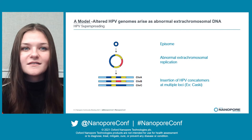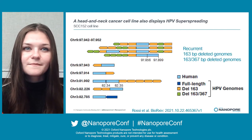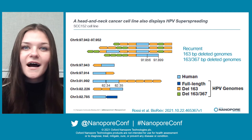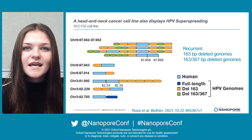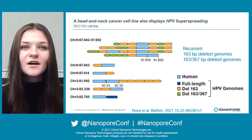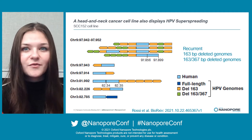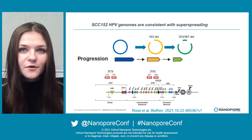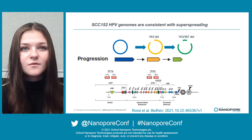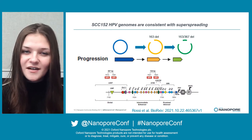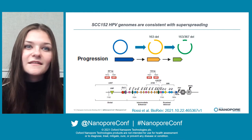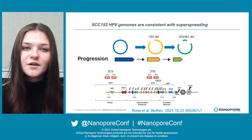To follow up on this finding, we characterized other cell lines to further understand the superspreading phenomenon. SCC152, a head and neck squamous cell carcinoma, contains complex HPV integrations on chromosomes 3 and 9. We performed long-read sequencing and discovered full-length and two deleted forms of the HPV genome: one with a 163 base pair deletion and another with both a 163 and a 367 base pair deletion. Similar to CASC, these truncated and full-length HPV genomes are randomly arranged as integrated multimers. We observed the 163 base pair deletion alone, or the 367 base pair deletion together with the 163 base pair deletion, indicating the 163 deletion developed first. These two deletions are in the HPV regulatory region and may have been selected for to increase E6 and E7 expression, in agreement with our superspreading model.